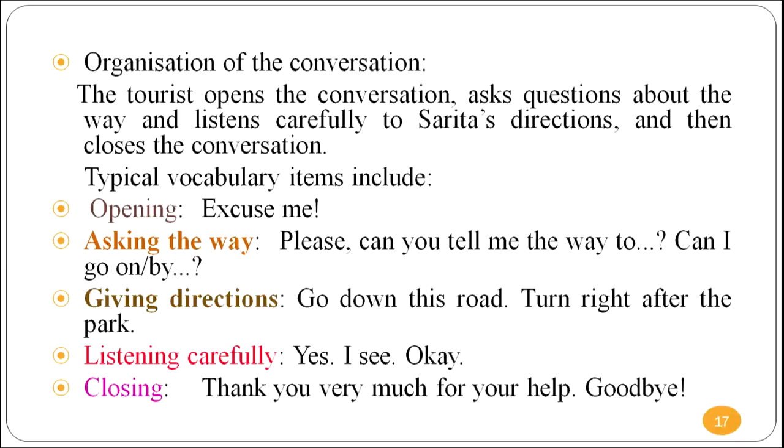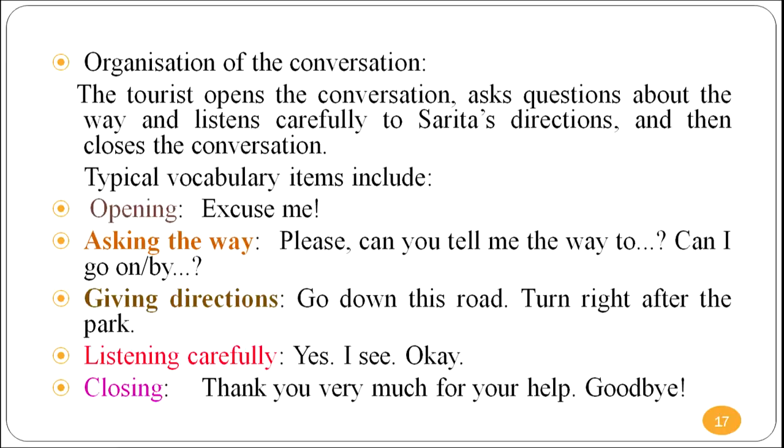Look at the conversation's organization. The tourist opens the conversation, asks questions about the way, listens carefully to Sarita's directions, and then closes the conversation. Typical vocabulary includes: opening — 'Excuse me'; asking the way — 'Can you tell me the way to ___?', 'Can I go on/by ___?'; giving directions — 'Go down this road', 'Turn right after the park'; listening carefully — 'Yes', 'I see', 'Okay'; and closing — 'Thank you very much for your help. Goodbye.' So this conversation leads to listening, understanding, comprehension, and also speaking.